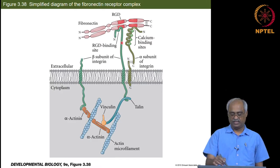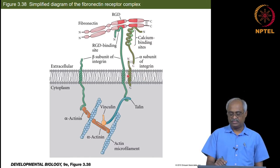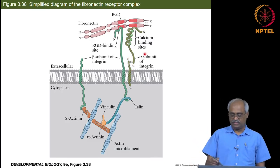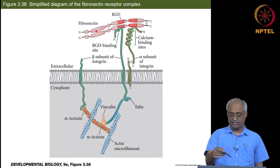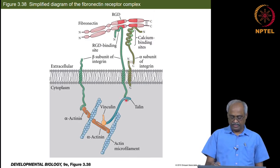The beta integrin goes as a continuous chain through the membrane, and the alpha integrin is connected by a disulfide bond — similar to how Notch is a heterodimer after cleavage before reaching the membrane. Integrin alpha and beta connect to fibronectin, which in turn connects to collagen and proteoglycans, while the integrins inside the cell link to actin microfilaments.